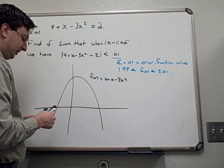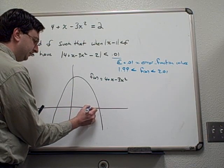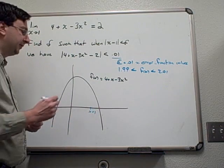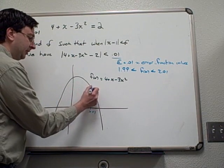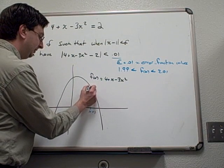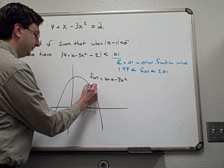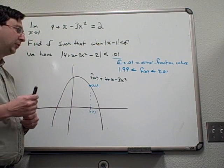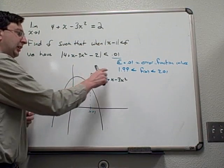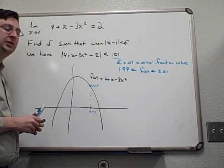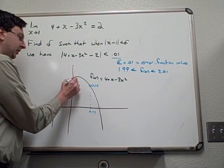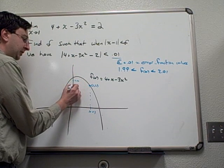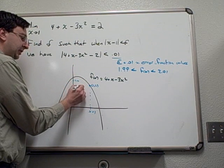Now at x equals 1, we know that the function has an output of 2. So at x equals 1, if we come up here, we have an output of 2. What we're looking for is what range of inputs allow the output of the function to stay between 1.99 and 2.01. So we're going to zoom in here and say this is 2.01 and this is 1.99.